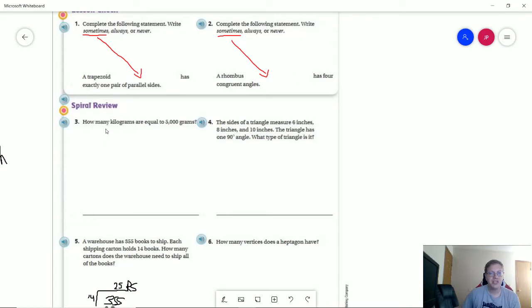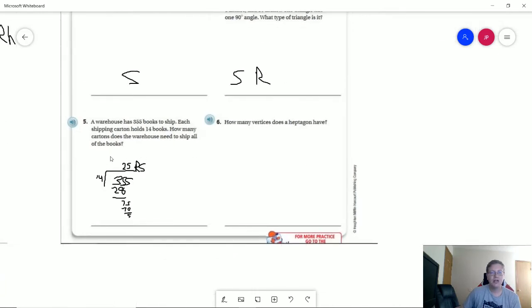So number three how many kilograms are equal to 5,000 grams that would be five. So our triangle we have three different measurements for the sides and we have a 90 degree angle. That means we would be a scalene right triangle. Number five we are here's my division problem we are going to have a remainder of five. So that means we are going to need an extra carton to ship the five remaining books that are not going to fit in another container. And so that means we would have 26 cartons that we would need to use to ship all of the books. The last one would only hold five books. Number six the number of vertices for a shape matches the number of sides that the shape has and the number of angles and so a heptagon would have seven.